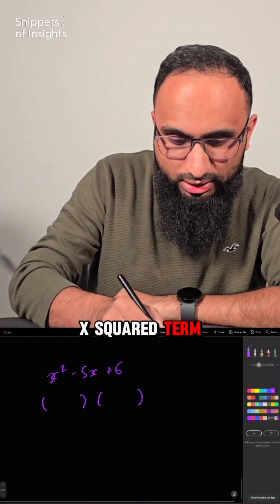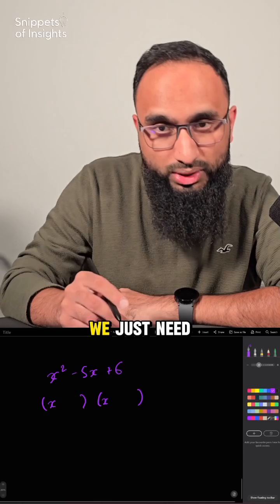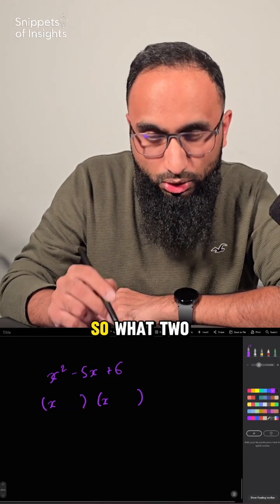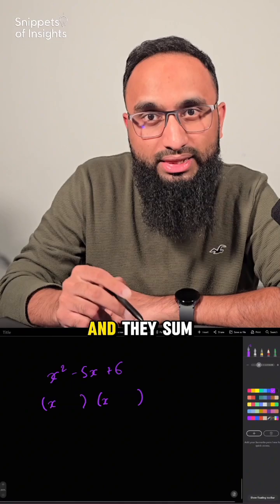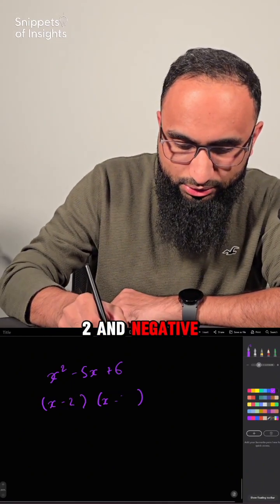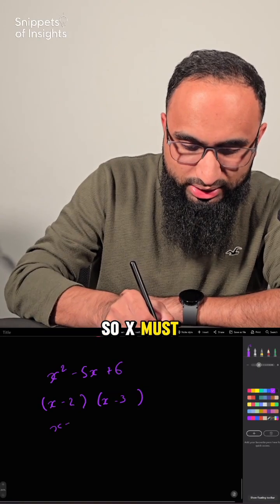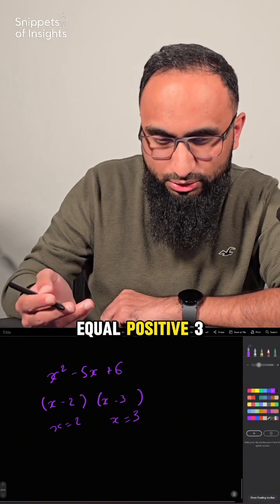Because it's an x² term only with no coefficient before the x², we just need x and x. So what two numbers multiply to get positive 6 and sum to get negative 5? Well, it's negative 2 and negative 3. So x must equal positive 2 or x must equal positive 3.